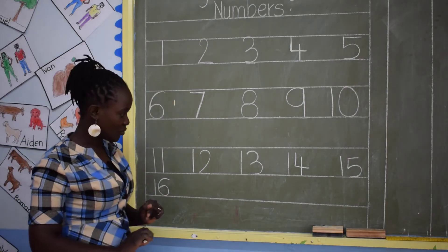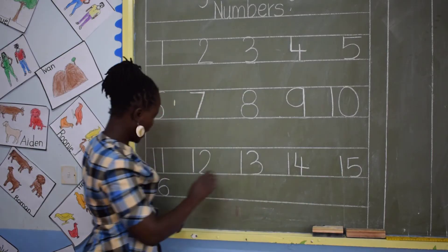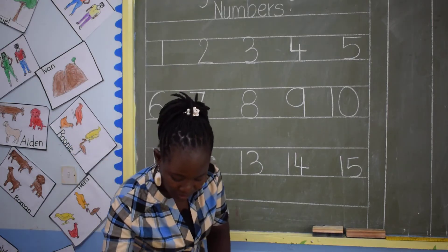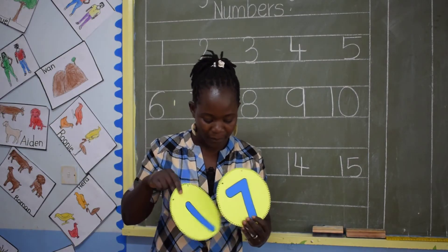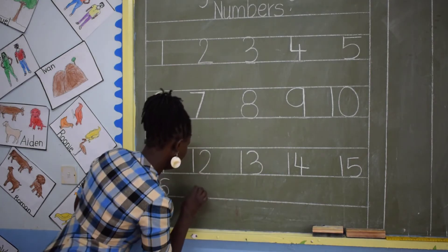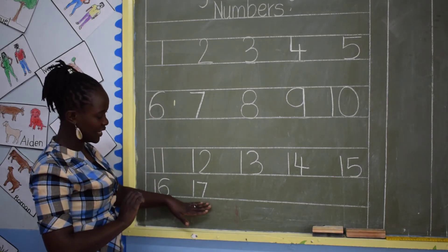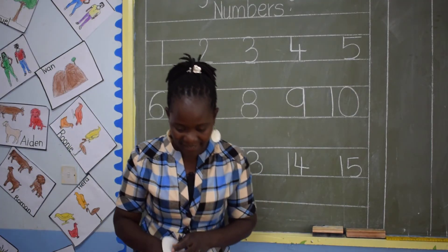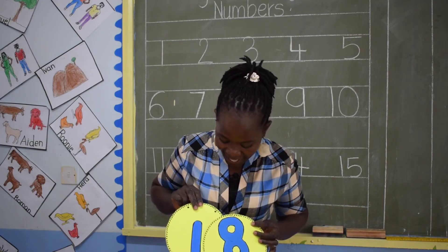Let's continue: 11, 12, 13, 14, 15, 16, and 17. The next number is 17. This is number 17 — 1 and 7. Then the next number is number 18 — 1 and 8. This is number 18.